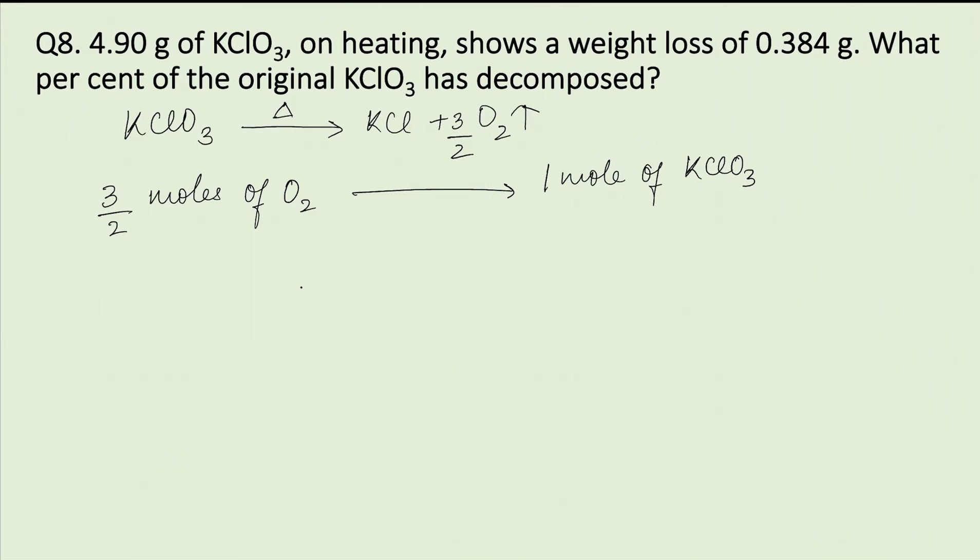3/2 mols of oxygen can be converted into weight of oxygen by multiplying by its molecular weight. Therefore, 3/2 times 32 grams of oxygen will be produced from 1 mol of KClO3, equal to 122.5g of KClO3.